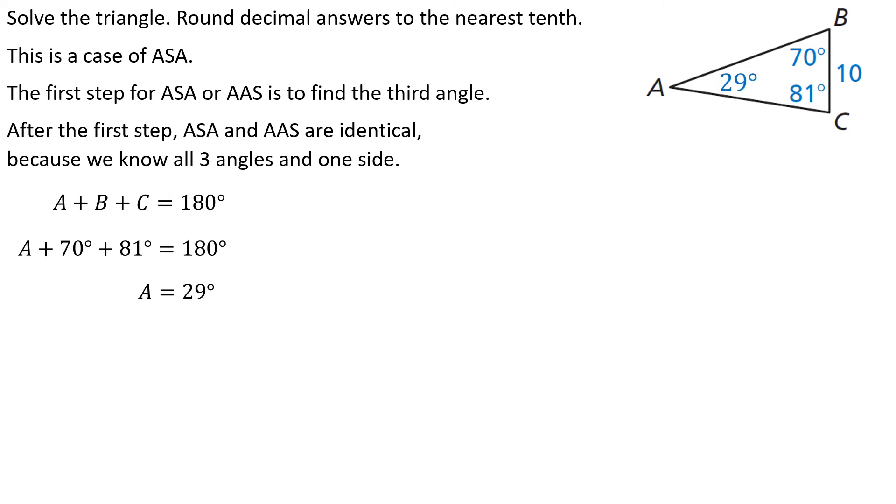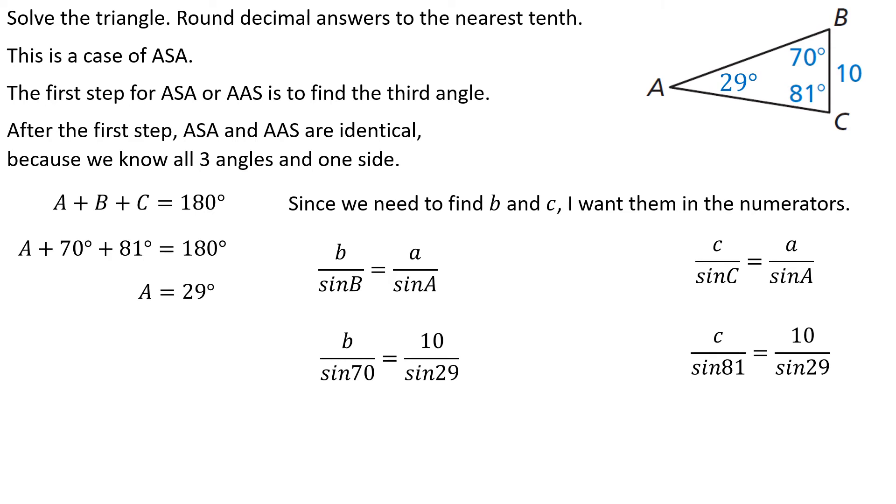Now I can set up a proportion for side B. And I can set up a proportion for side C. I want those in the numerators because that's what I'm looking for. So those are two different proportions, right? The one toward the left, I'll use to find side B. The one toward the right, I'll use to find side C. All right, so in each case, I can plug in the values I do know. And yeah, we're going to need more room. I have to agree with that here.